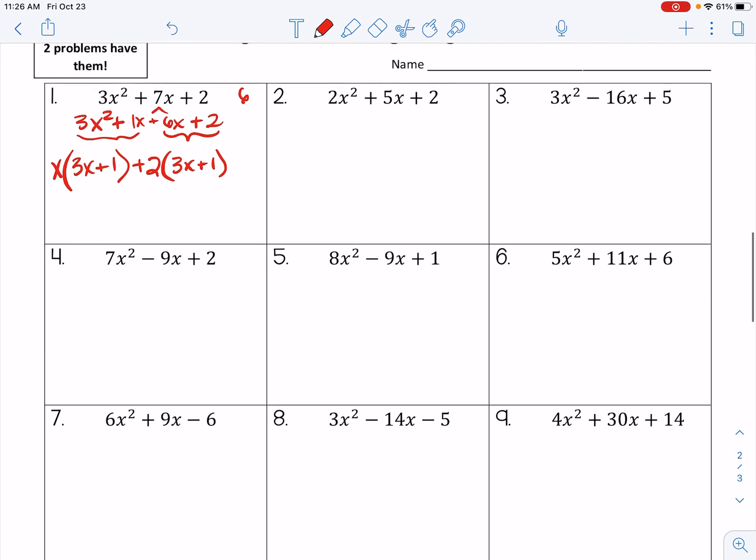So now we're saying that we have 3x + 1 times x + 2, and this is in our factored form. You could also write that as x + 2 times 3x plus 1. You know that the order doesn't matter there.